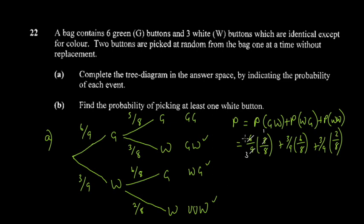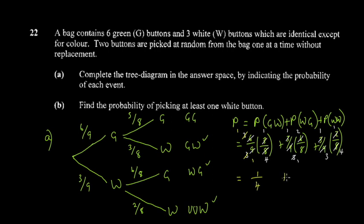Simplifying: for P(GW), 3 into 9 gives 3 and 2 into 6 gives 3, so it becomes 1 over 4. For P(WG), 3 into 3 gives 1 and 3 into 6 gives 2, giving 2 over 8, which simplifies to 1 over 4. For P(WW), simplifying gives 1 over 12.